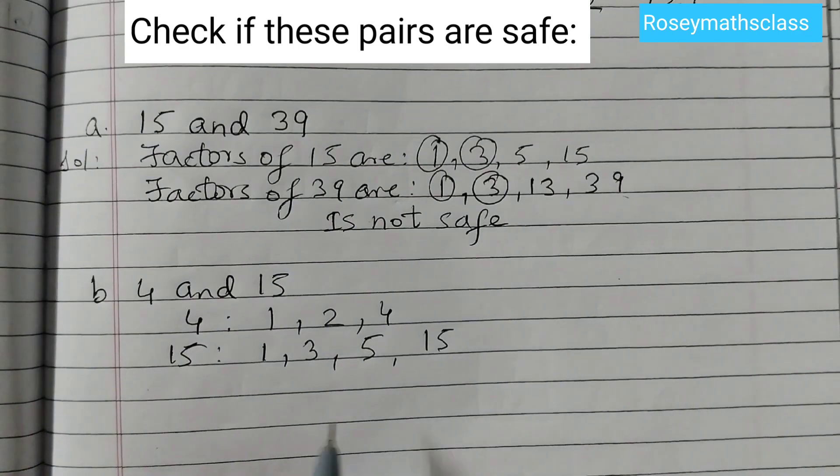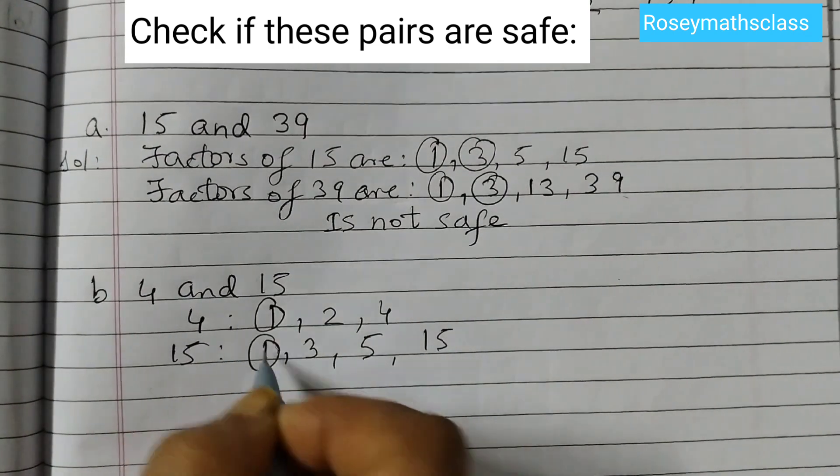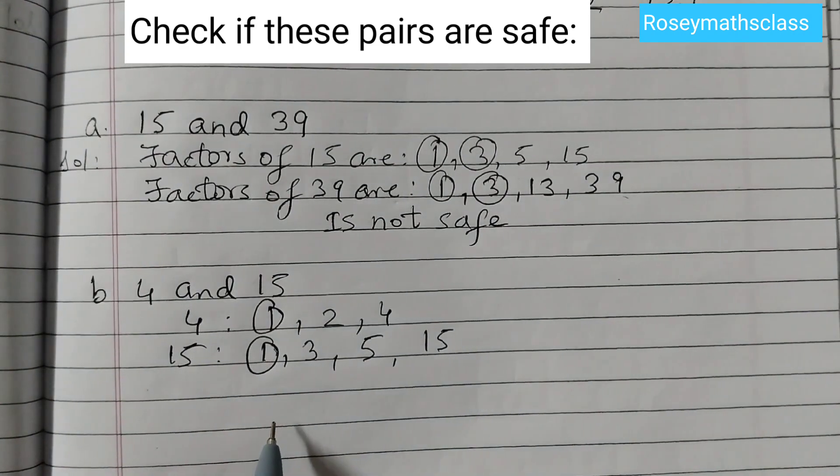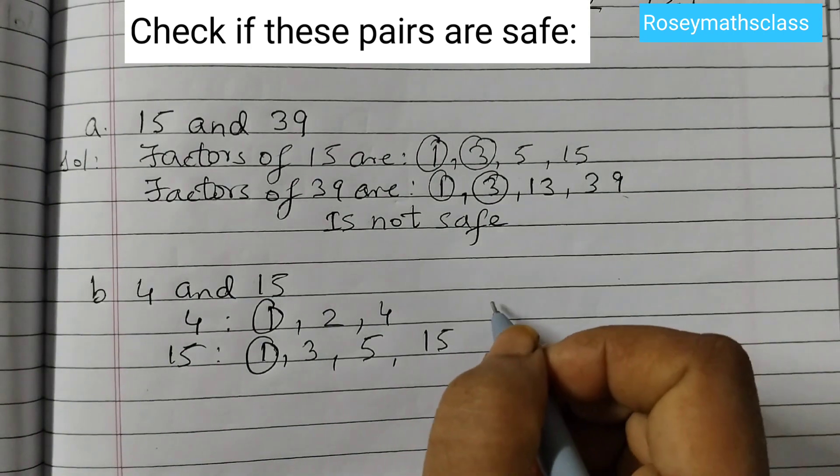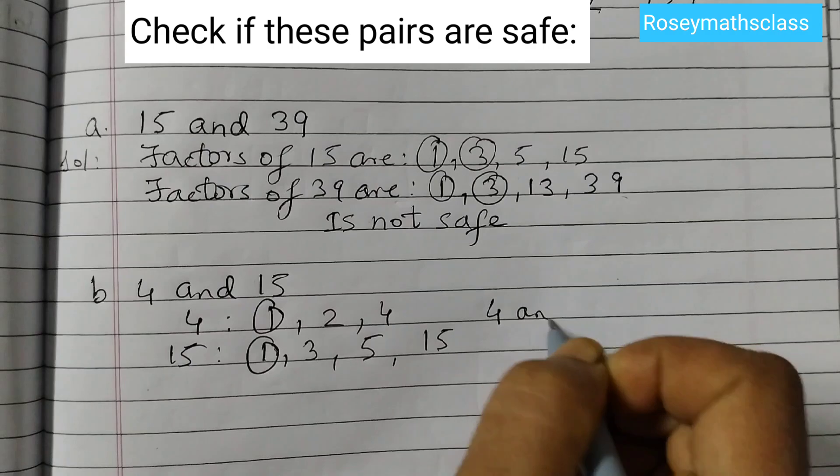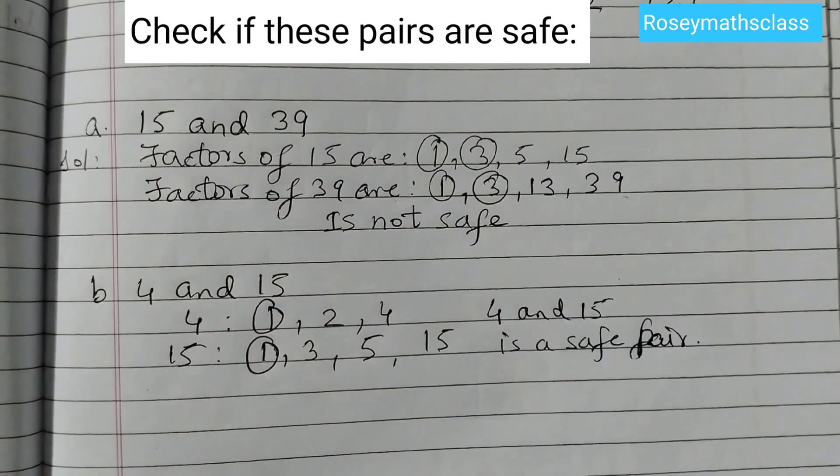Now see here, the only common factor is 1. There is no other common factor. That means 4 and 15 is a safe pair.